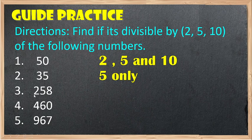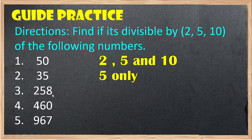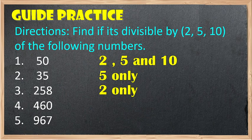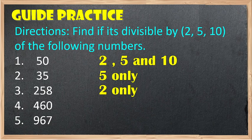Number 3: 258. Divisible by 2 — yes. Divisible by 5 — no, because it does not end with 0 or 5. Divisible by 10 — no, because it does not end with 0. Therefore, the answer is 2 only. Number 4: 460. Divisible by 2 — yes, because the last digit is even. Divisible by 5 — yes, because it ends with 0. Divisible by 10 — yes, because the last digit is 0.